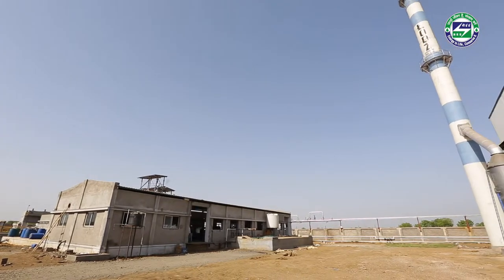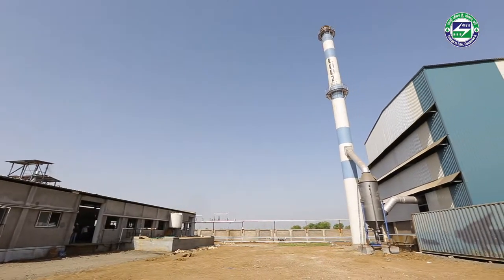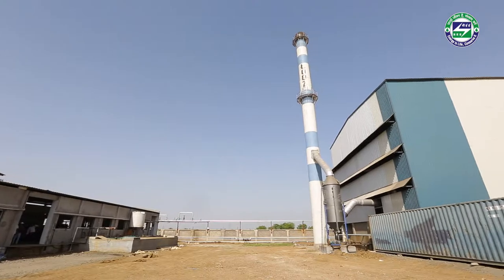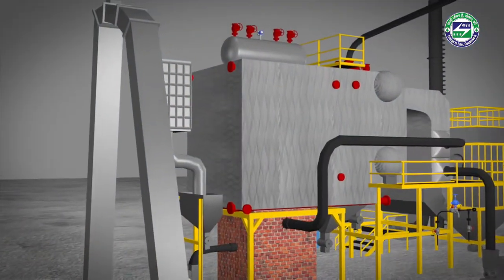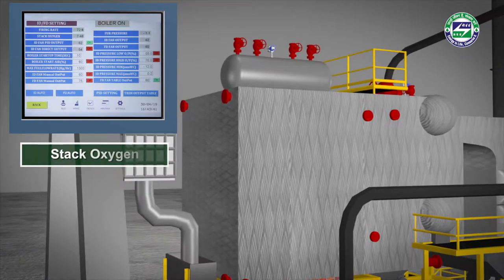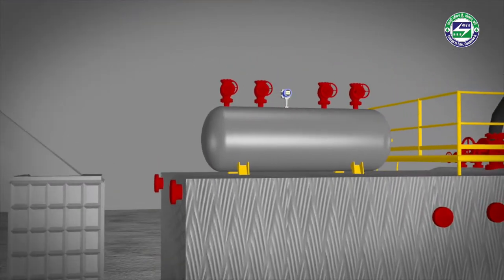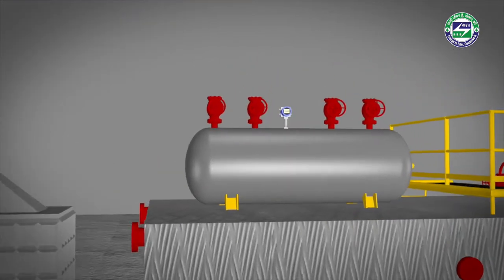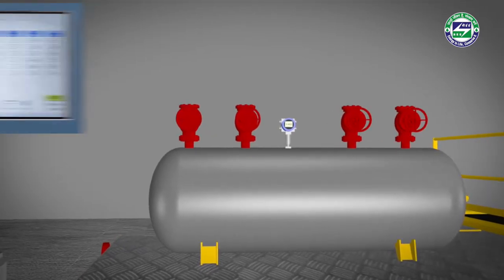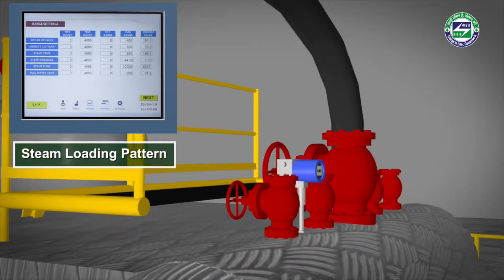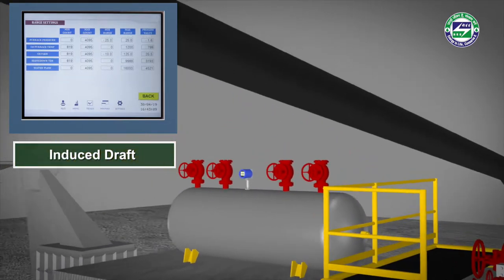The improved system cuts down stack loss by trimming excess air in flue gas through IDFD control automation based on furnace pressure, stack oxygen, and boiler load. It reduces unburnt loss by optimizing fuel feed rate and analyzing steam loading patterns, stack oxygen level, and induced draft.